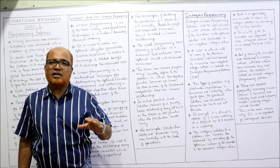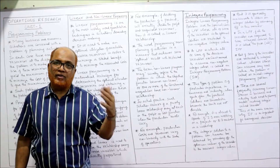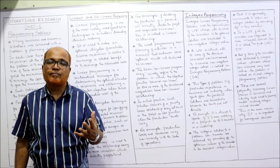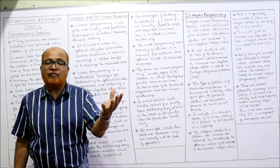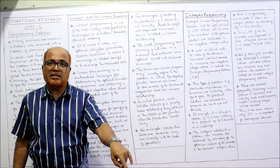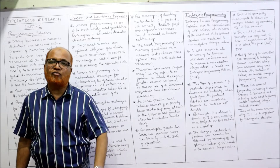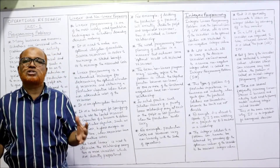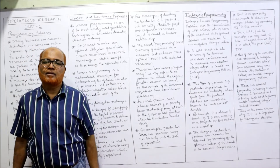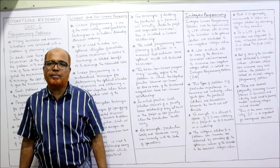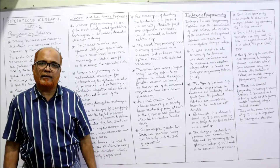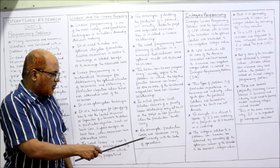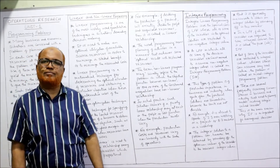In many practical situations we find non-linear relationships. It is not compulsory that when sales are doubled, profit will also be doubled. There may be a synergical effect where profit grows at a higher rate than the rate of sales or production. For example, production cost and revenue vary non-linearly with the scale of operation.